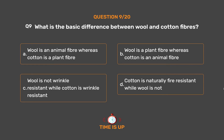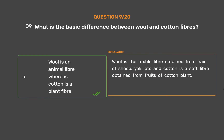The correct answer is Option A. Wool is an animal fiber whereas cotton is a plant fiber. Wool is the textile fiber obtained from the hair of sheep, yak, etc., and cotton is a soft fiber obtained from the fruits of the cotton plant.